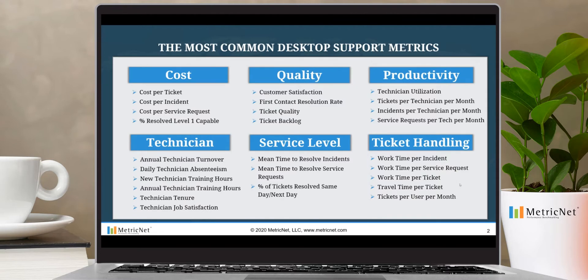Let's start with a broad list of the most common metrics for desktop support. Shown here on page two are 26 of the most common metrics for both desktop support and field services. We've organized them into six categories: cost metrics, quality metrics, productivity and technician metrics, service level, and ticket handling metrics. This is not an all-inclusive list — there are literally hundreds of metrics — but these are the most important ones, and they are the metrics we use when we benchmark a desktop support or field services organization.